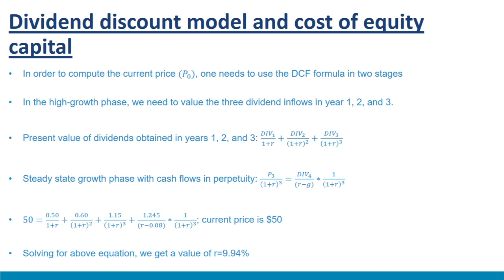These PV computations employed a two-stage DCF valuation model. In the first stage — the high growth phase — the firm was highly profitable (ROE = 25%) and plowed back 80% of earnings, resulting in a high growth rate of 20%. From year three onwards, profitability declined and payout increased, meaning less money was plowed back. The long-term growth rate settled at a steady state of 8%. This example can be suitably extended to three or more stages of different growth regimes — for example, a first phase at 20%, a second phase at 12%, and a final steady state at 8%.